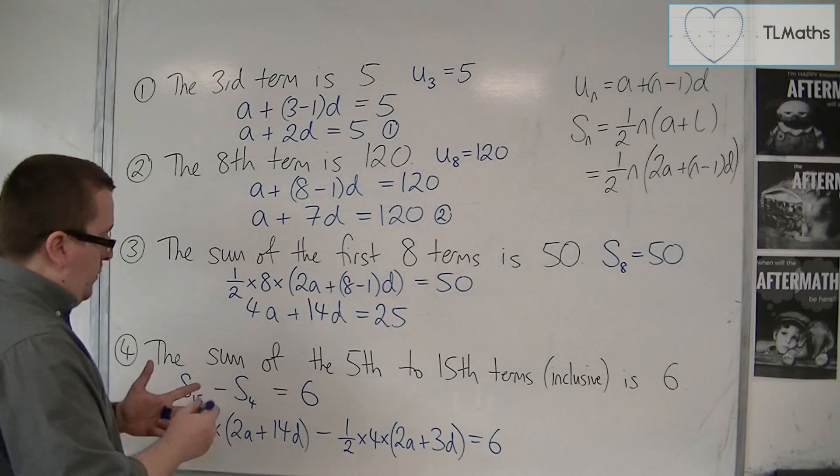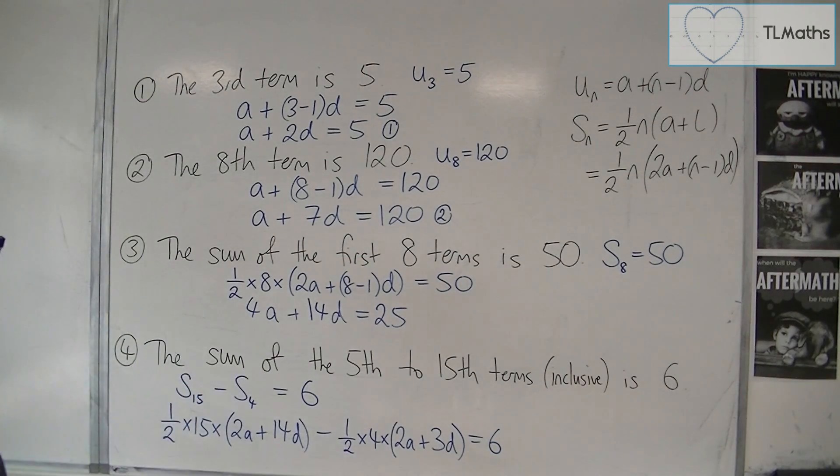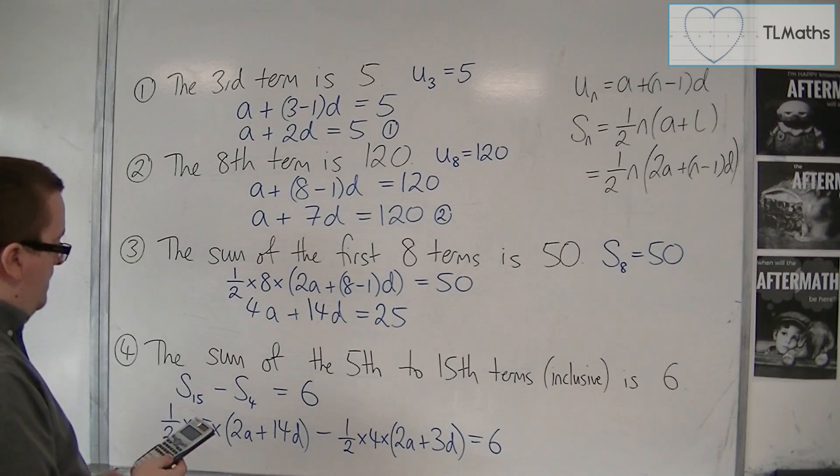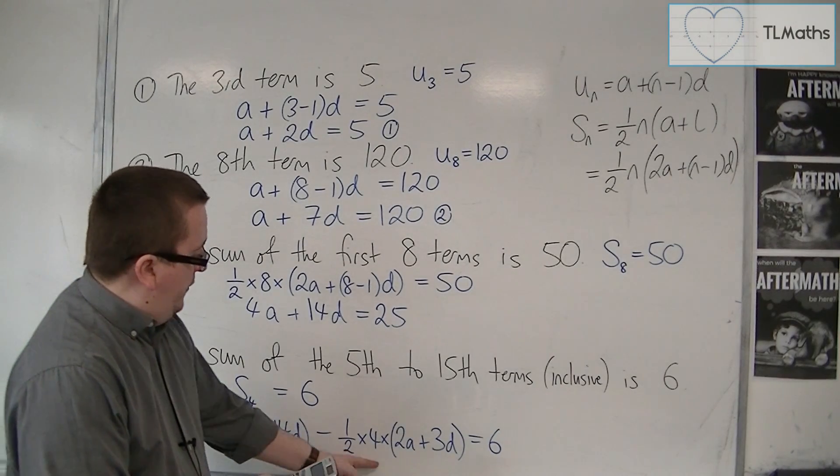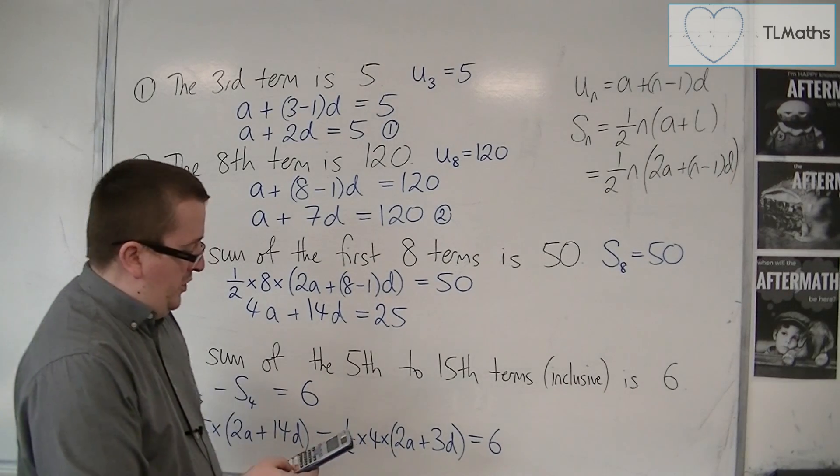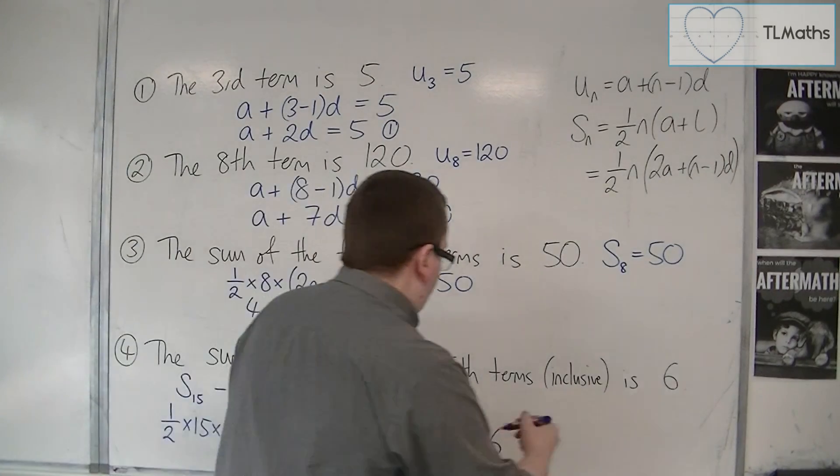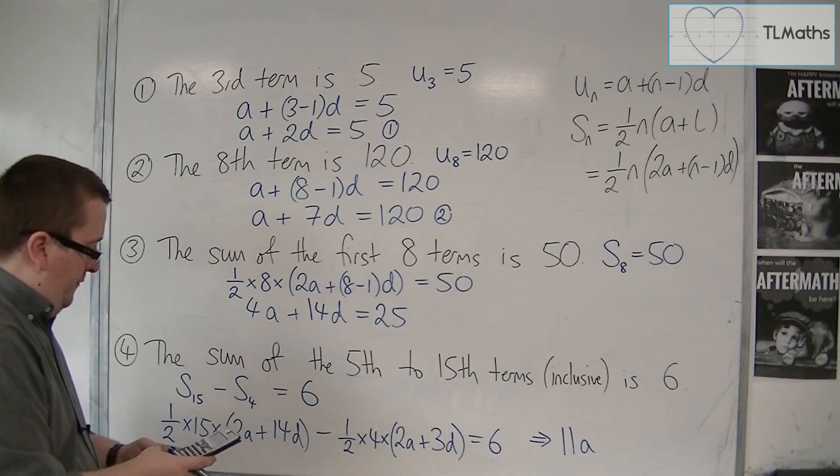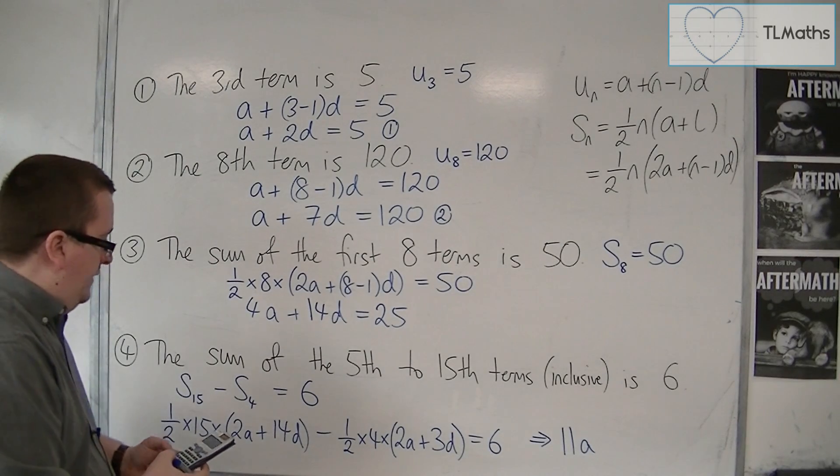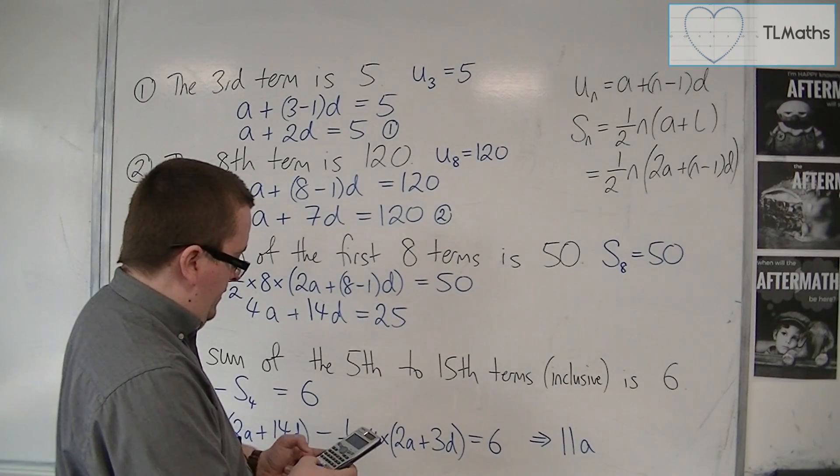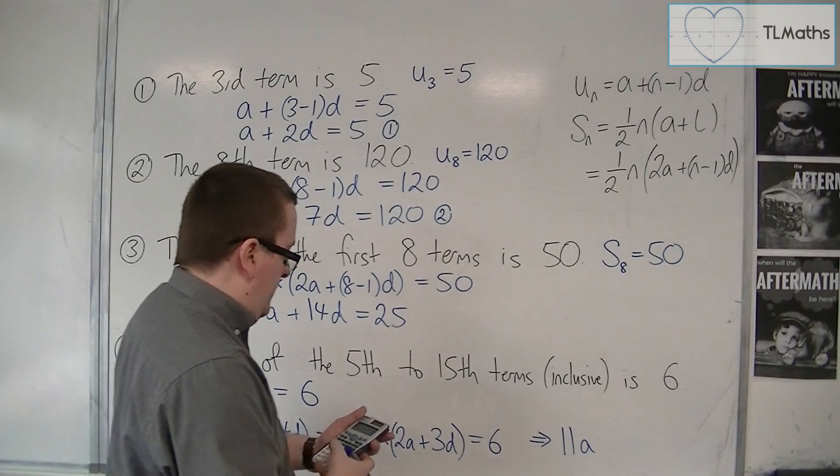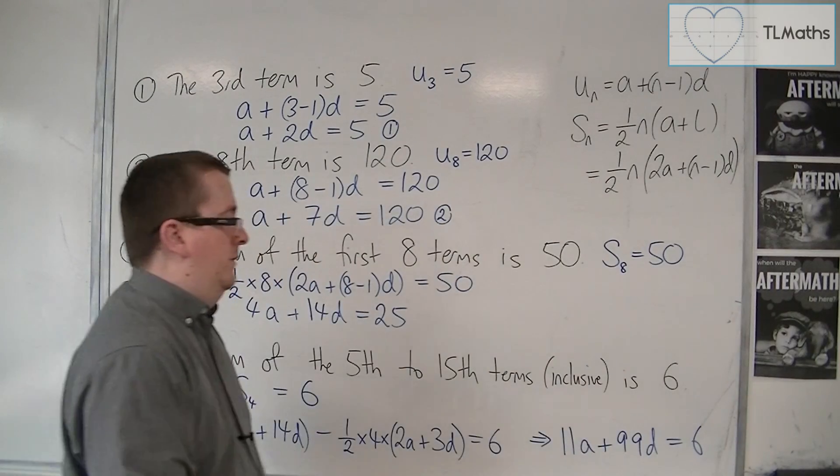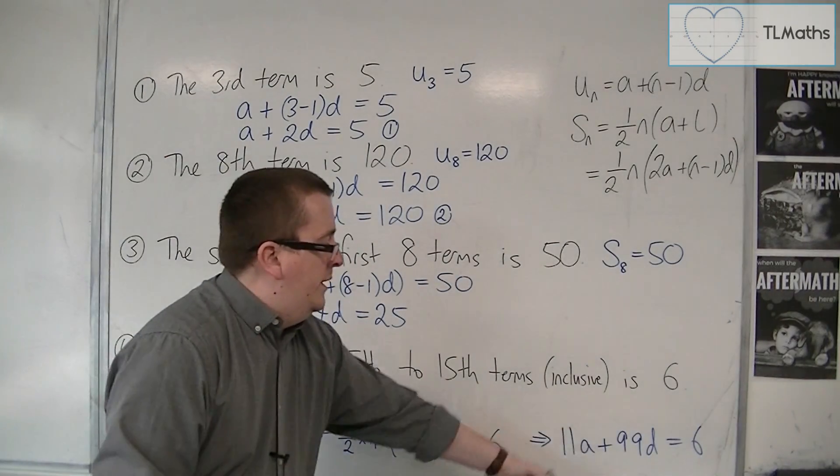So what do we have? I'll cheat using the calculator. So we've got one half times 15 times 2, then take away one half times 4 times 2. So we've got 11a, so you should be able to get this to 11a, and then one half times 15 times 14, take away one half times 4 times 3. So that's 99. So 11a plus 99D must be equal to 6. And that is the equation that we get down to.